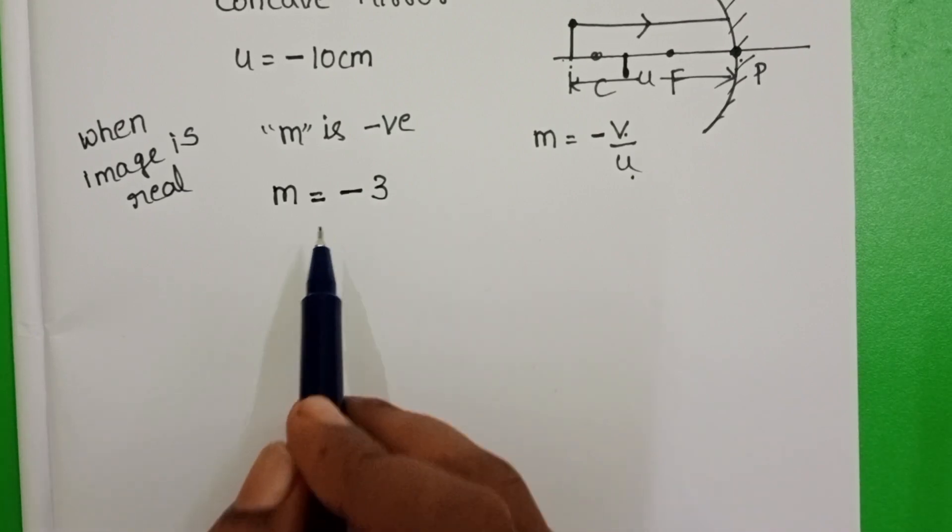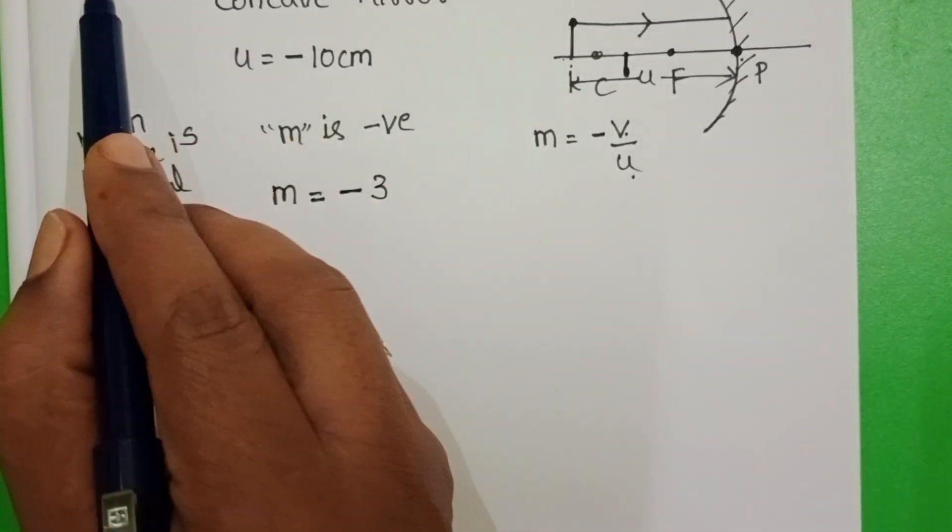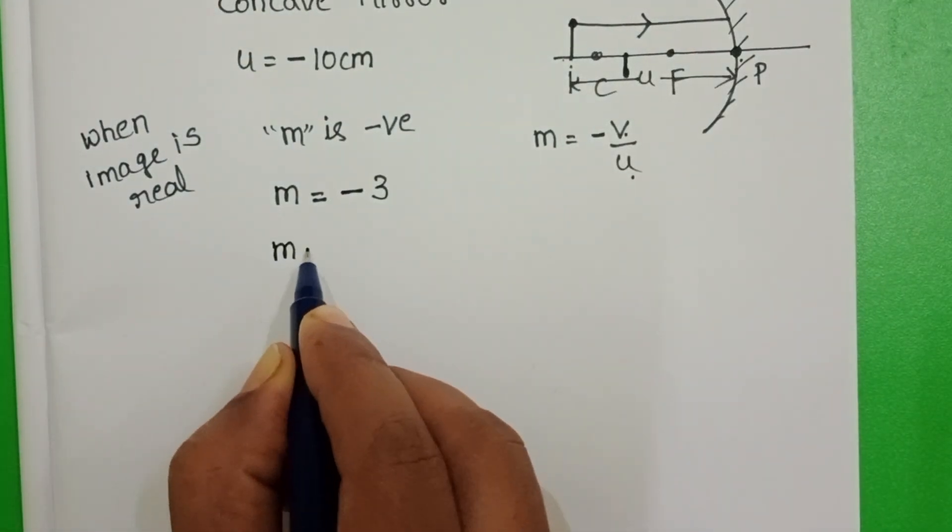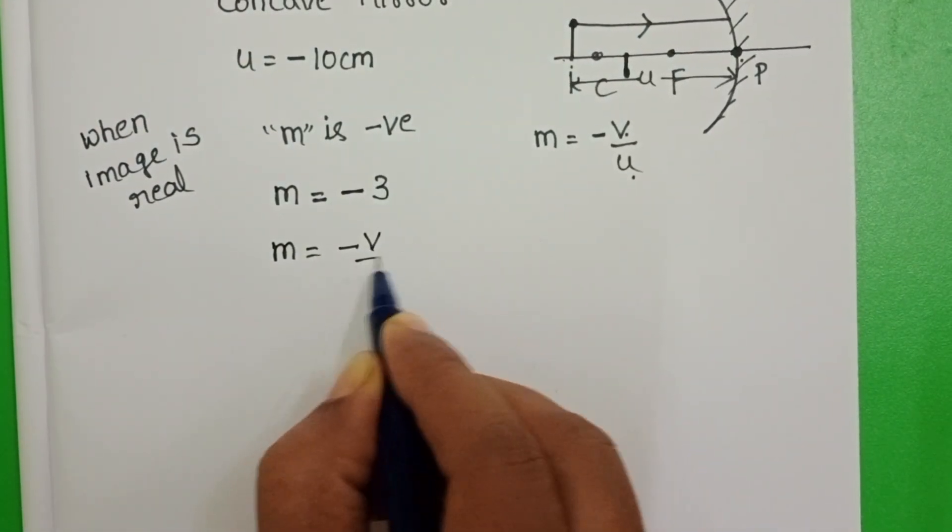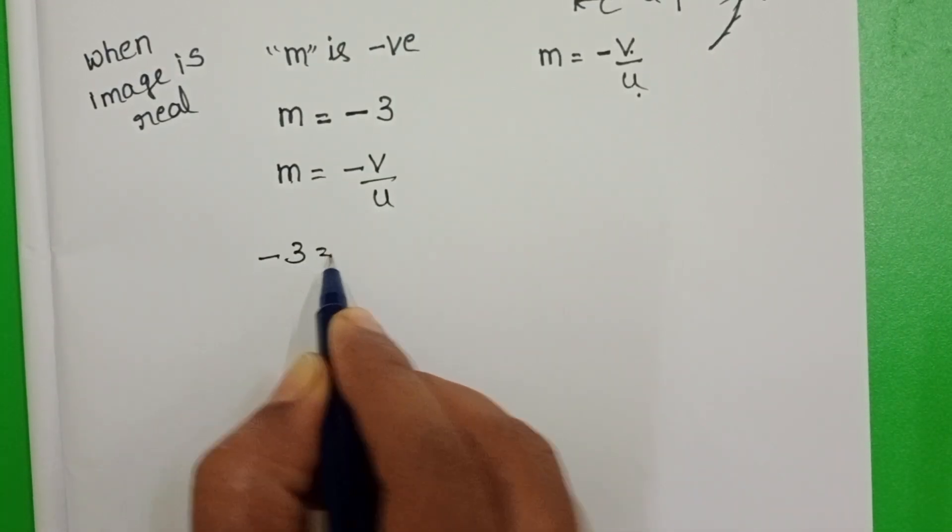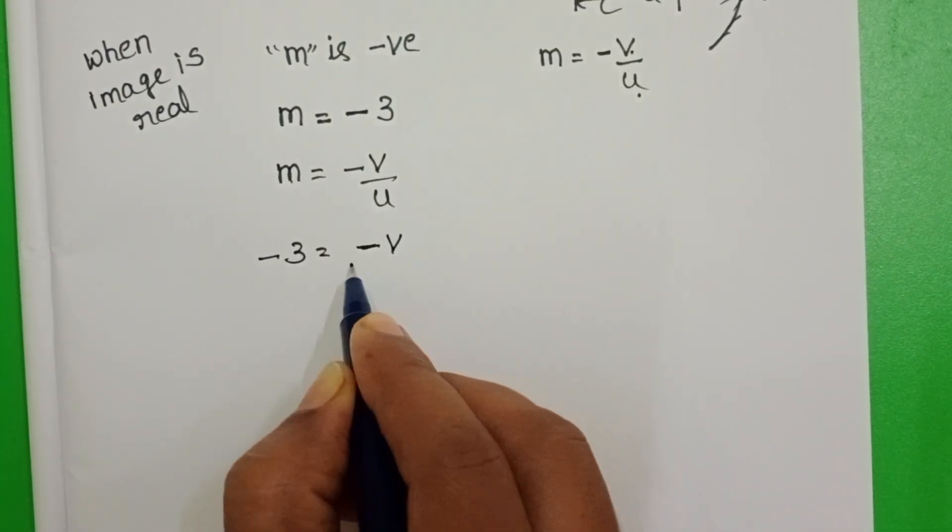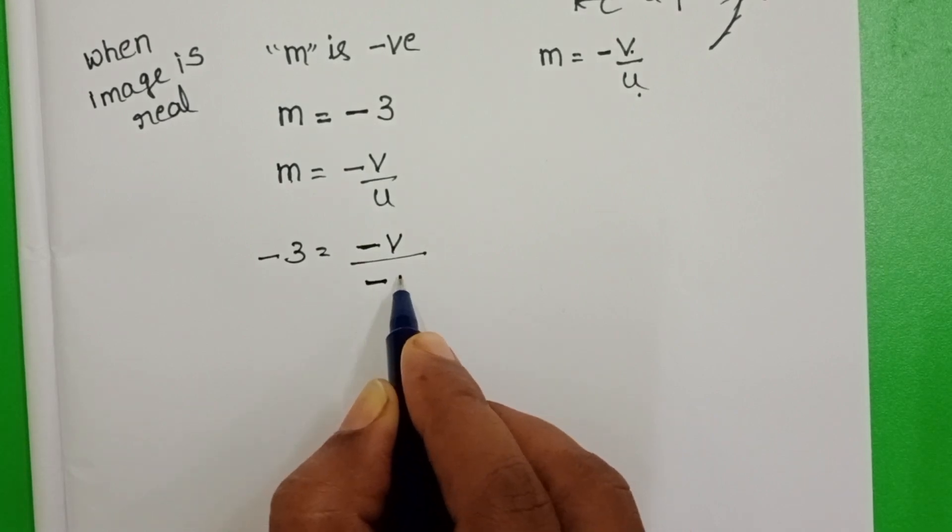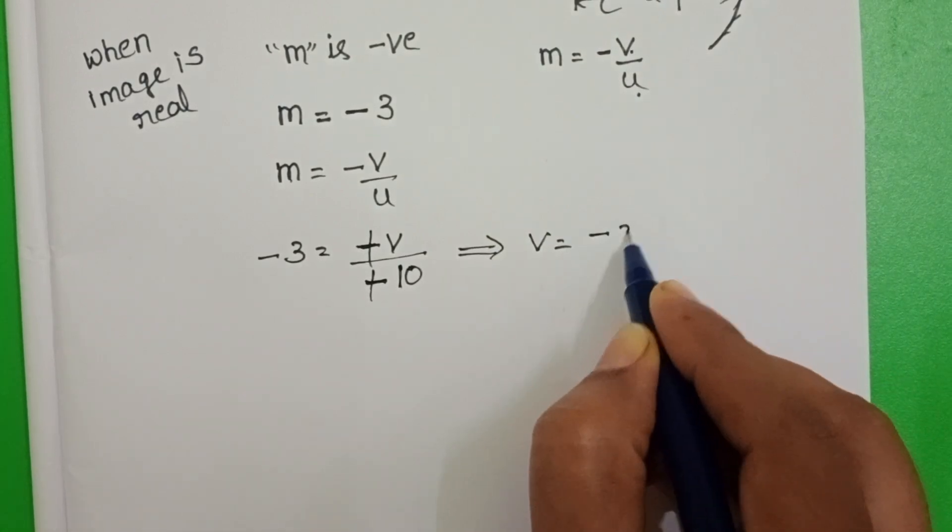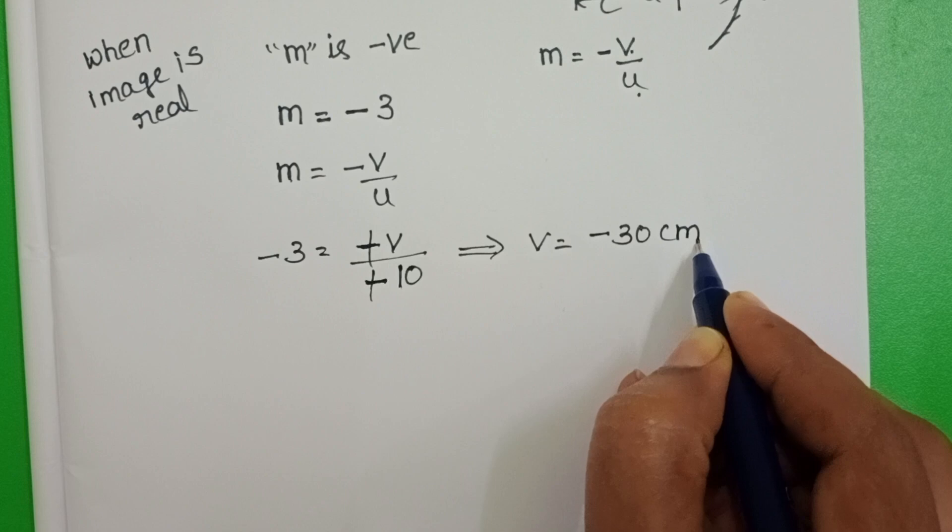By using this information, we have to find out the location of the image. Take the formula. M is equals to minus V by U. In place of M minus 3, minus V by minus 10 centimeters. Here, minus minus get cancelled. From this, V is equals to minus 30 centimeters.